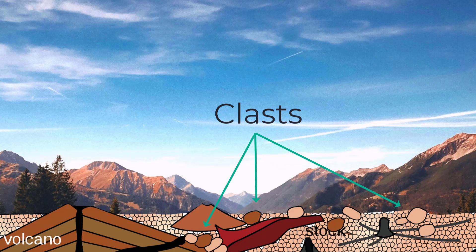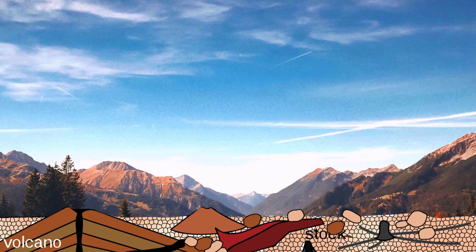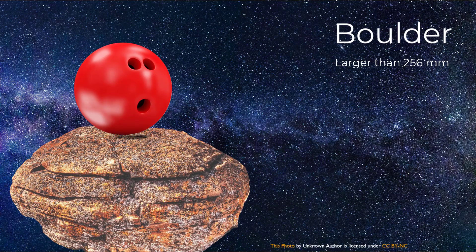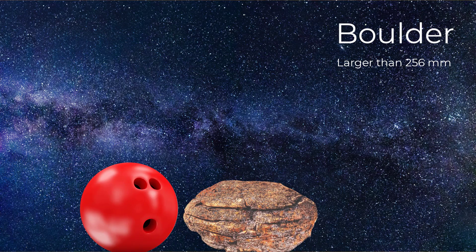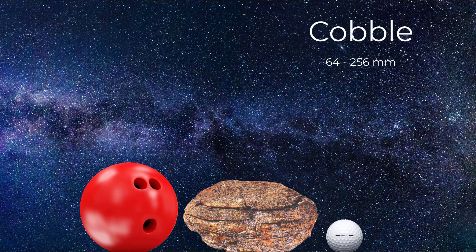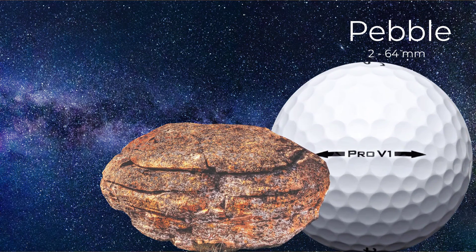These broken down pieces of crust are called clasts, and each clast size gets its own name. If the clast is bigger than about a bowling ball, we call it a boulder. If it's smaller than a bowling ball but bigger than about the size of a golf ball, it's called a cobble. It's called a pebble when the clast is smaller than a golf ball but bigger than a pinhead.